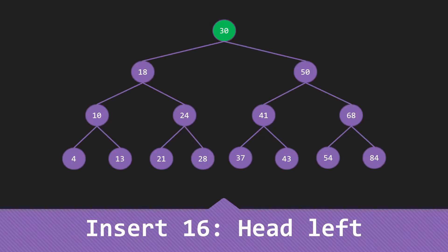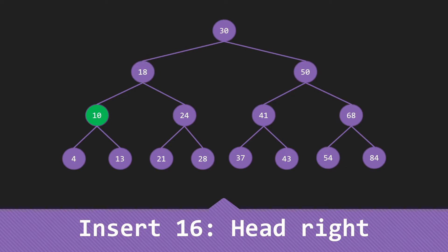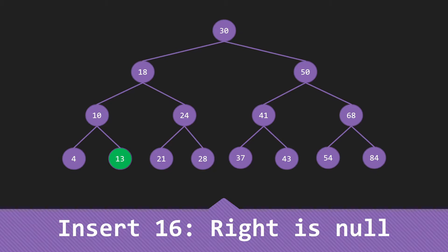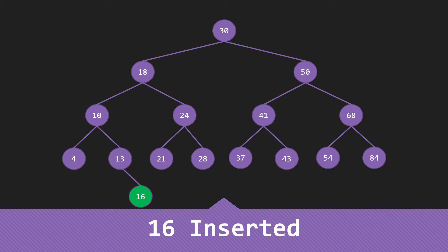So if we want to insert 16 into this tree, we start looking at the 30 — 16 is smaller, so we head to the 18. 16 is smaller than 18, so we head left again. 16 is bigger than 10, so we head right. 16 is bigger than 13, so we head right again. But here we actually have the null we're looking for. So we insert the 16 to the right of the 13.